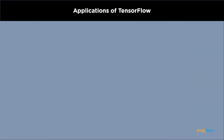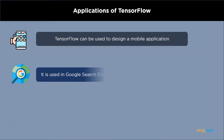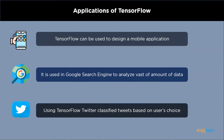Coming to applications of TensorFlow: TensorFlow is used to develop mobile applications. It is used in the Google search engine to analyze vast amounts of data. Twitter updated their platform to display tweets in the order of ranking after implementing TensorFlow to rate tweets by importance for a particular user. So these are the important applications of TensorFlow.